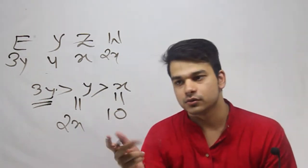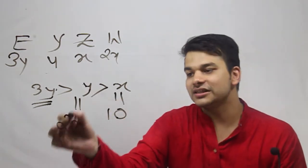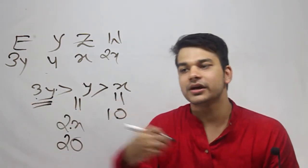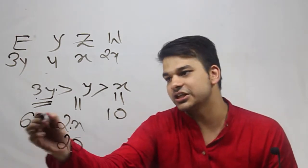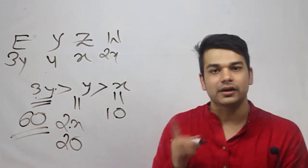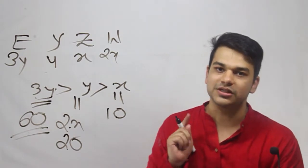Now if I combine the two, x is 10, y is equal to 2x, which is 20. So 3y will be 3 times 20, which is 60. So I can determine Ali's age when I combine the two. So the answer is going to be option C.